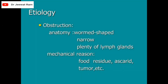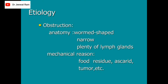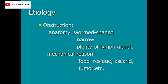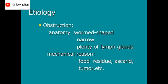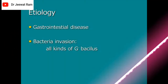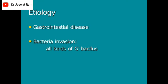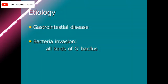Causes of acute appendicitis: Obstruction. Anatomy — worm-shaped with plenty of lymph nodes. Mechanical causes include food residue, ascaris, and tumor. Gastrointestinal disease. Bacterial invasion — all kinds of gram bacillus.